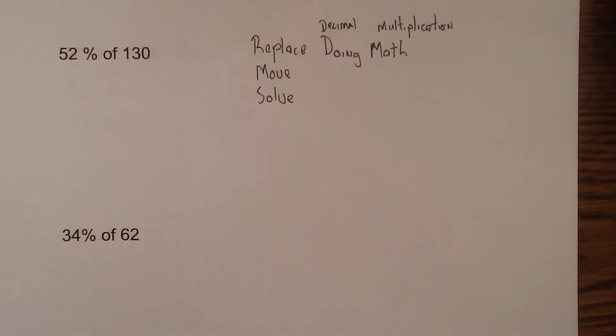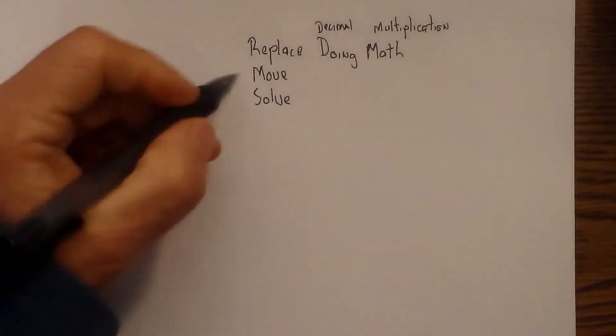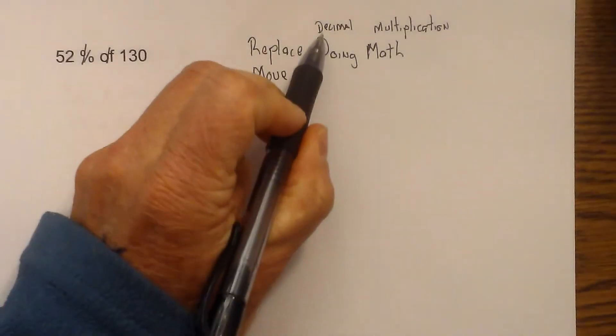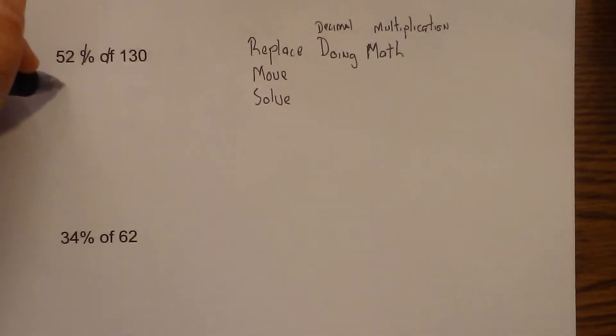The doing math is going to be for a decimal and the math is multiplication. So now, let's solve this. I'm going to first replace the percent and the of with a decimal and a multiplication. I'm going to replace the percent with a decimal and the of with a multiplication sign.